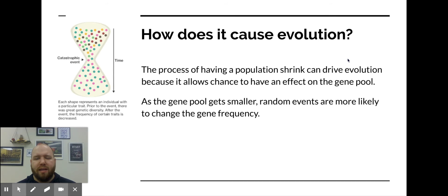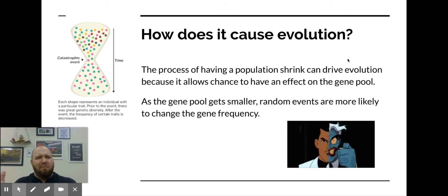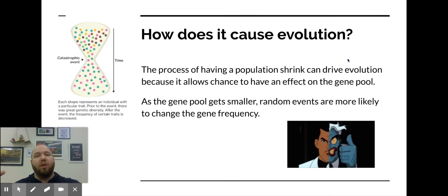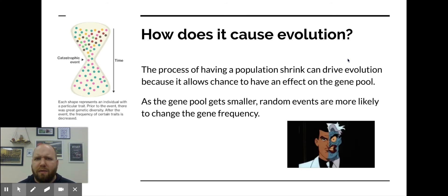This process of having the population shrink drives evolution because it has a significant effect on the gene pool. As the gene pool gets smaller, random effects are more likely to change the gene frequency. Think about coin flips — if you flip a coin four times, it might end up 50-50 like it should, but it also might end up 75-25 or even 100% one way. That becomes less and less probable the larger the numbers get. If you flip a coin 200,000 times, your number would be pretty near 50-50. But in a small population, it's very easy for those numbers to be thrown off significantly.